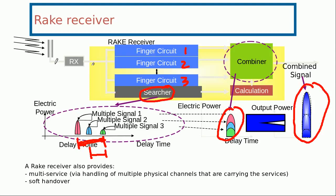Apart from that, rake receiver has some other uses as well. For example, thanks to the finger circuits it is possible that a 3G WCDMA mobile can connect to multiple channels.